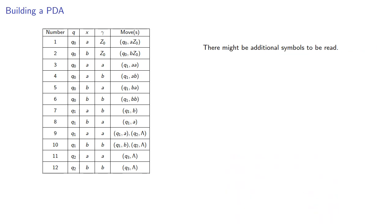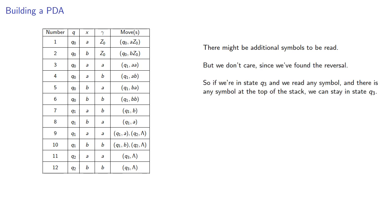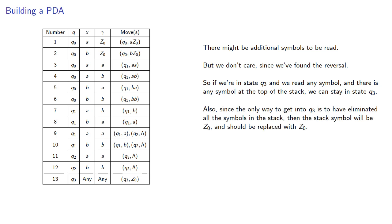There might be additional symbols to read, but we don't care since we've already found the reversal. If we're in state q3, and we read any symbol, and there is any symbol at the top of the stack, we can stay in state q3. Also, since the only way to get into state q3 is to have eliminated all the symbols in the stack, the stack symbol must be Z0 and should be replaced with Z0.